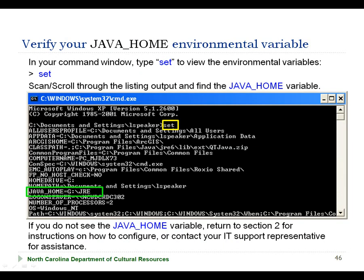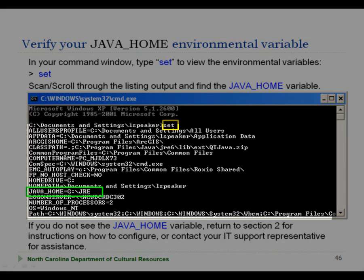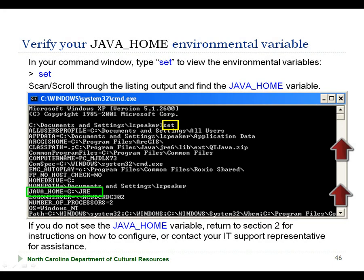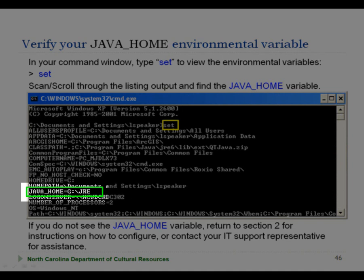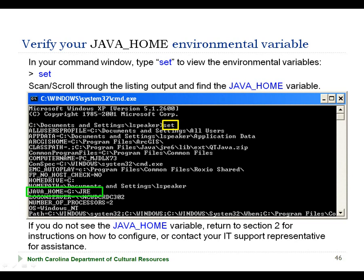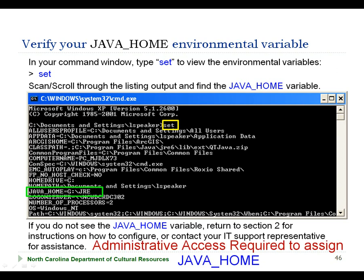Prior to running the Bag command, you are going to want to make sure that your Java home environment variable is set. You do this by typing in the set command at the command prompt. This will display an alphabetized listing of all the environment variables set on your computer. You may need to scroll up to see the Java home environment variable. In this example, the Java home environment variable is assigned to our G drive, the portable disk device, as that is where the Java runtime environment and the Bagit command are installed. If you do not see the Java home environment variable set, you can return to section 2 for instructions on how to configure it, or contact your IT support representative. Be aware that you will need administrative access on your computer in order to assign this environment variable.